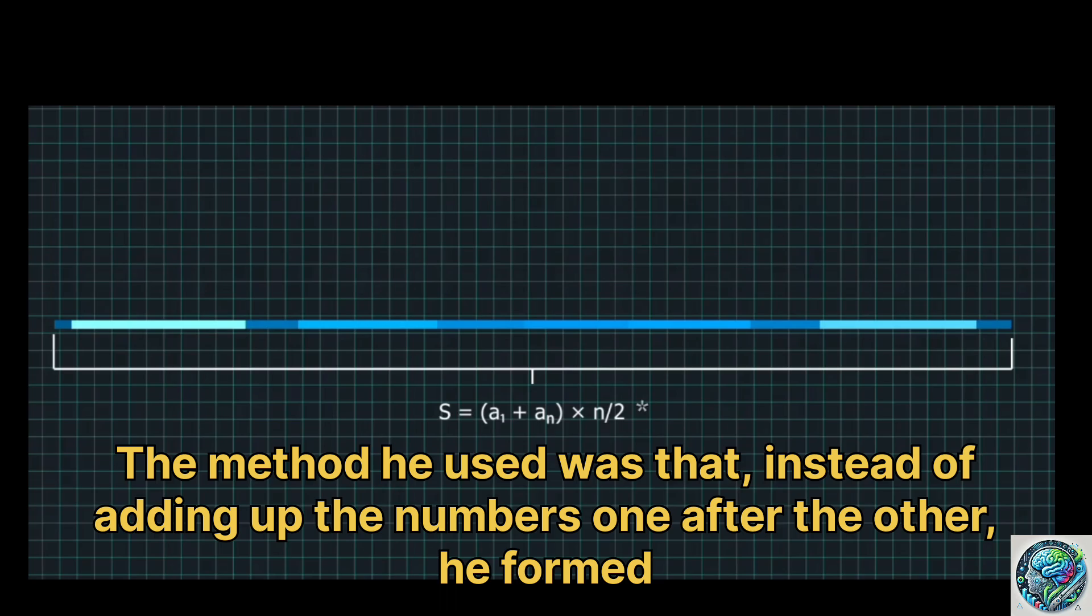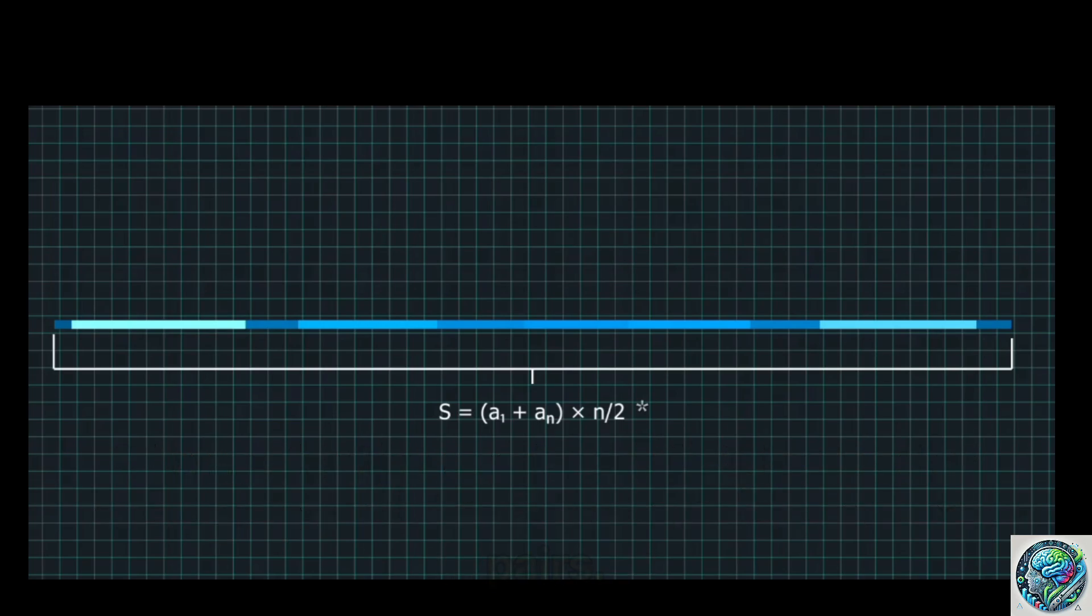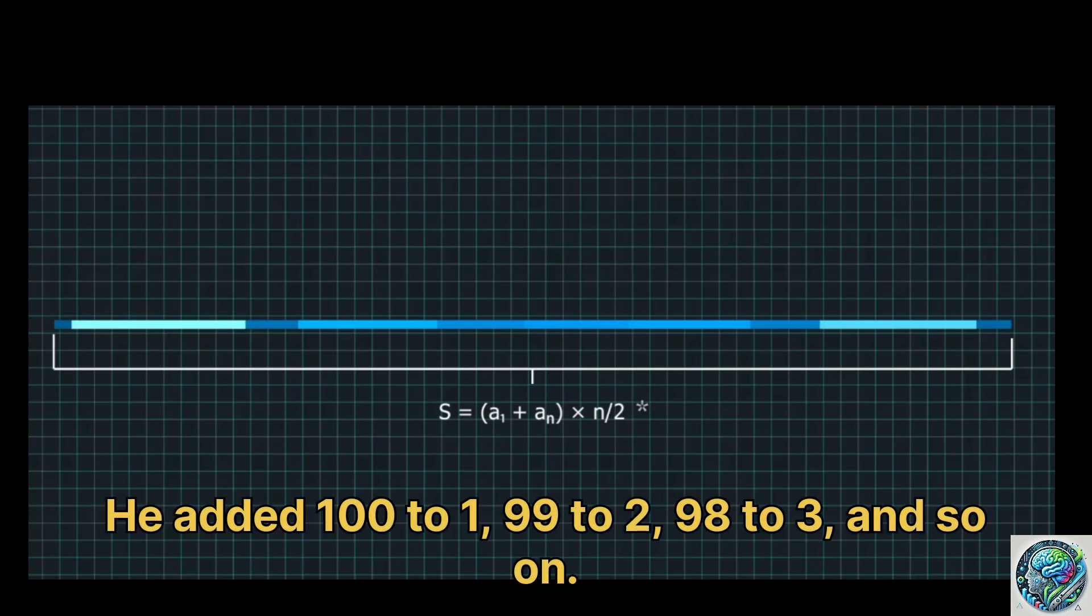The method he used was that, instead of adding up the numbers one after the other, he formed pairs. He added 100 to 1, 99 to 2, 98 to 3, and so on.